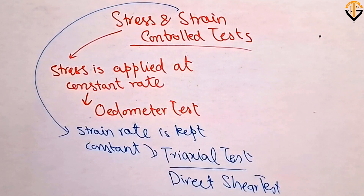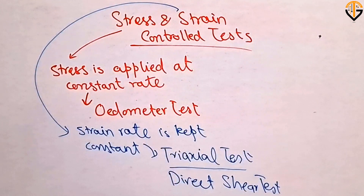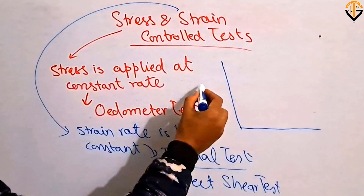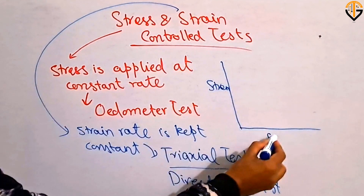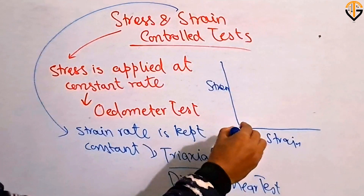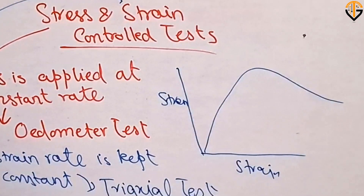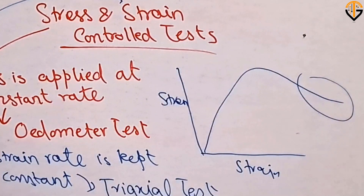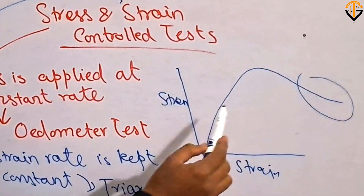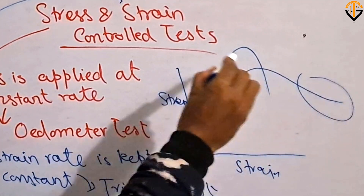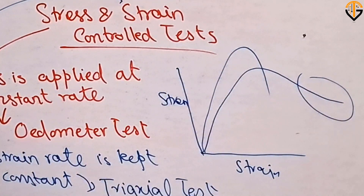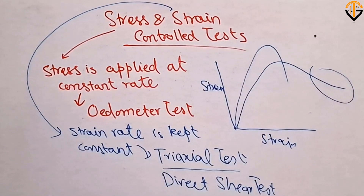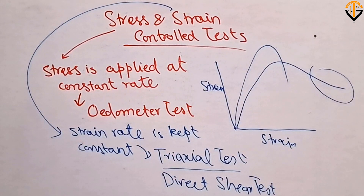The advantage of strain control tests is that you can obtain the post-peak failure response of any material. Looking at a stress versus strain curve, you can obtain the post-peak response in a strain control test. However, it is not possible to obtain the post-peak behavior in a stress control test — this is a key limitation of the stress control test.